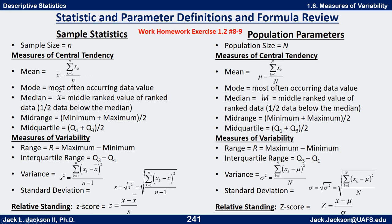For a population, we use mu, summing the x values and dividing by capital N. The mode is the most often occurring data value. The median, which we'll use x-tilde or capital M for, or sometimes the Greek letter eta for a population—we put our data in order, rank it from lowest to highest, and find the data value that cuts it in half. Midrange is minimum plus maximum divided by 2, and midquartile is Q1 plus Q3 divided by 2.